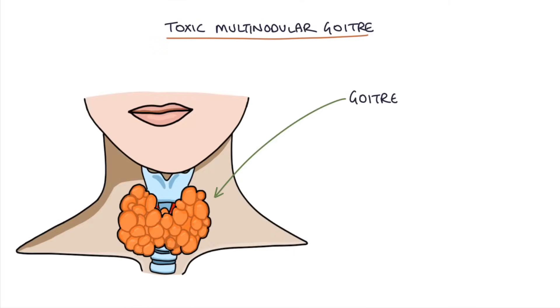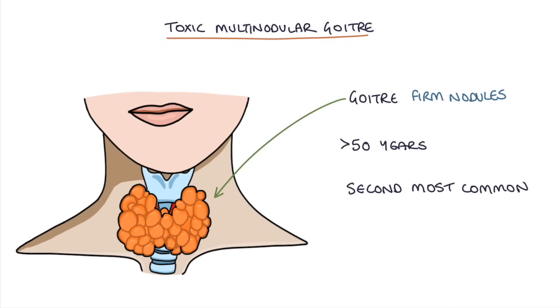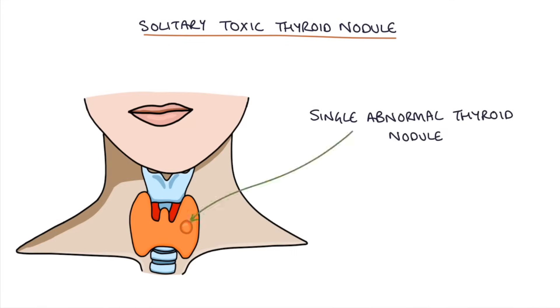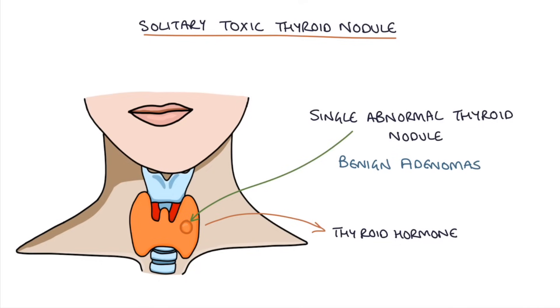With toxic multinodular goiter, you'd have a goiter and when you palpate it during your thyroid exam, you'd feel firm nodules. Most patients with toxic multinodular goiter are above 50 years old, and it is the second most common cause of thyrotoxicosis. A solitary toxic thyroid nodule is where a single abnormal thyroid nodule acts on its own to release thyroid hormone. These nodules are usually benign adenomas and are treated by surgical removal of the nodule, which stops the excess thyroid hormone production.